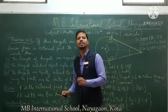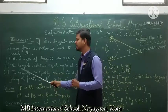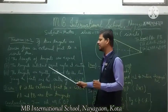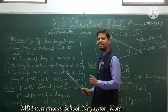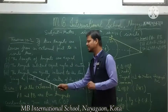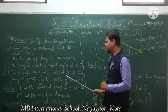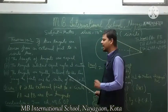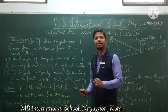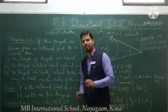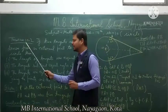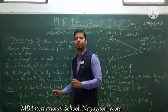The second and third points of Theorem 10.2 are: the second point is that the tangents subtend equal angles at the center. And the third point is that the two tangents are equally inclined to the line joining the external point and the center of the circle.